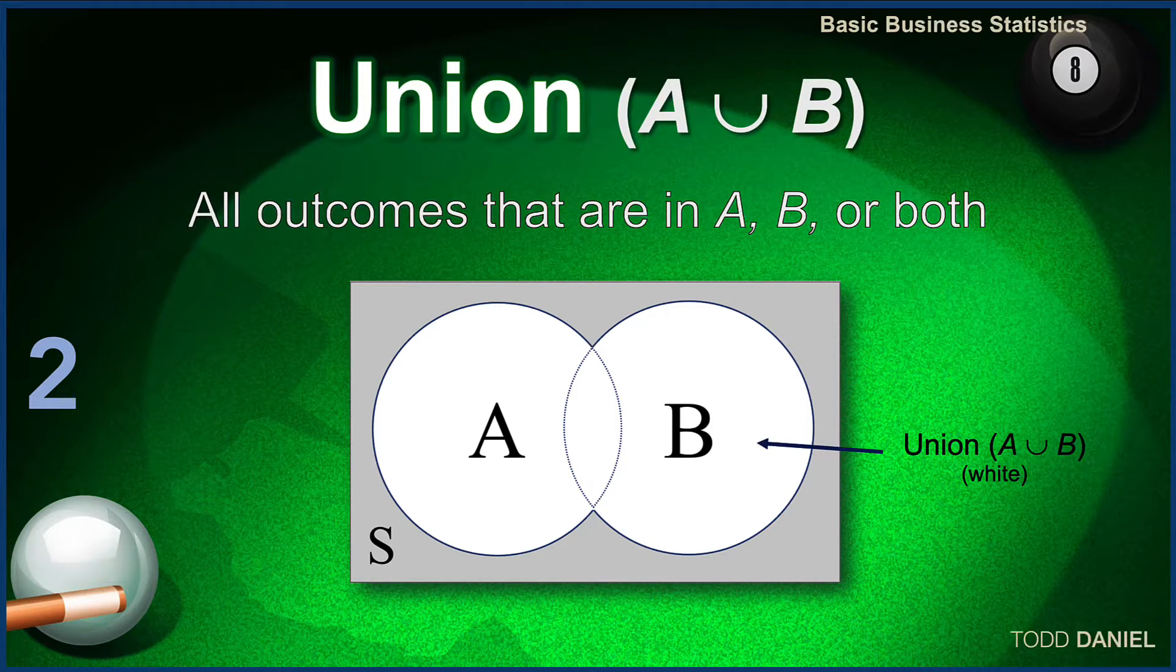Sometimes you have relationships between variables in which they share specific outcomes. And this is called a union. The union includes all outcomes that are in A or B or both.